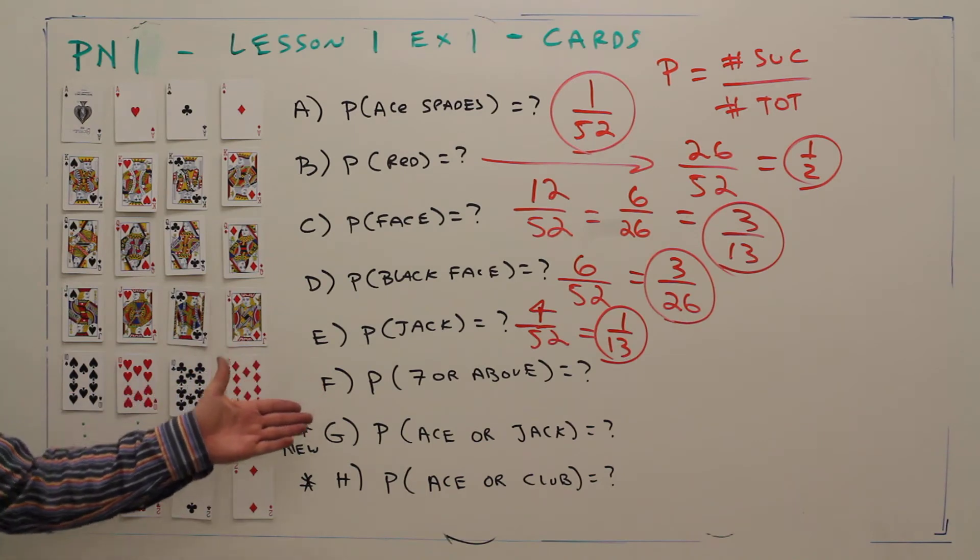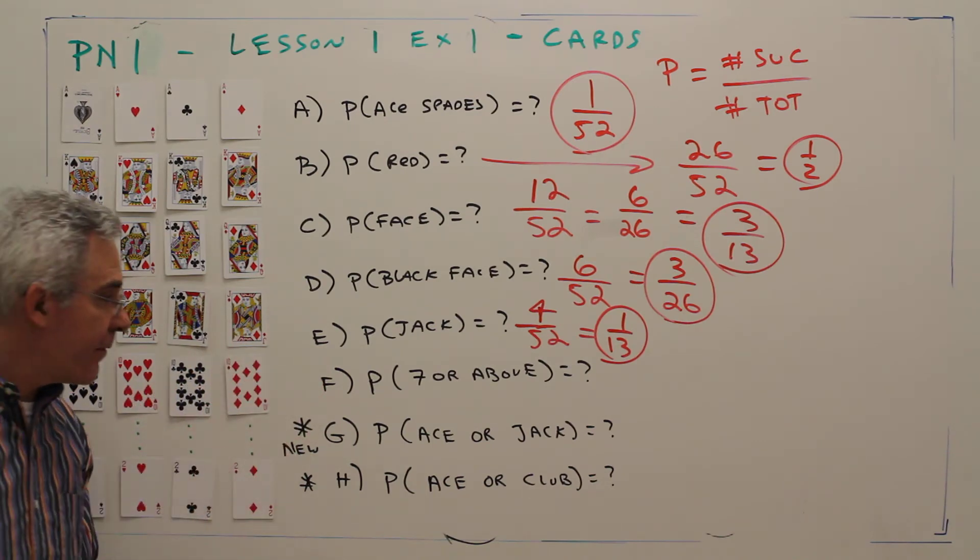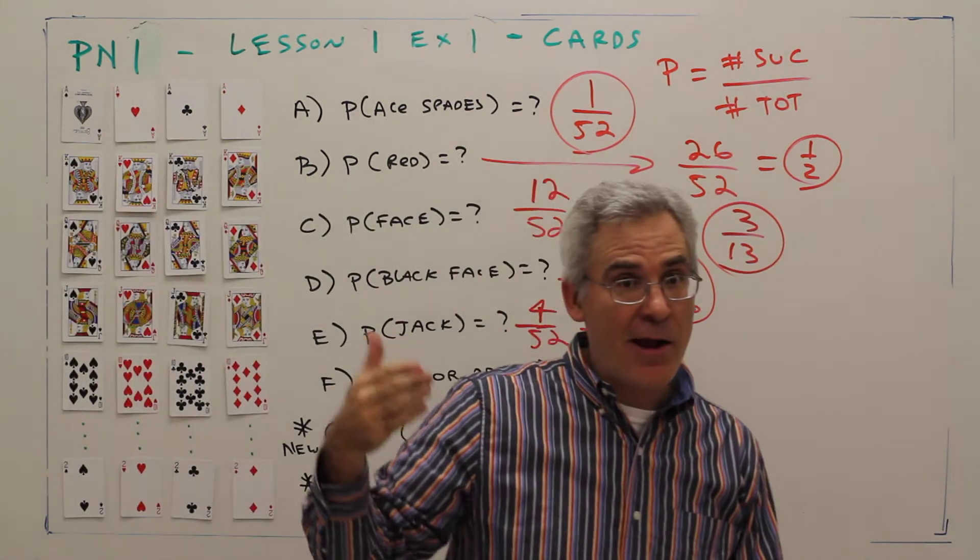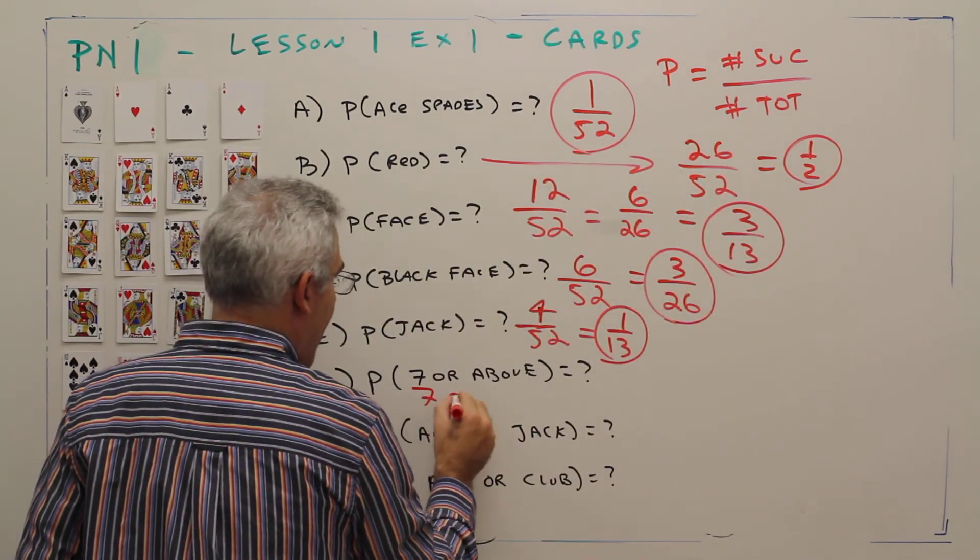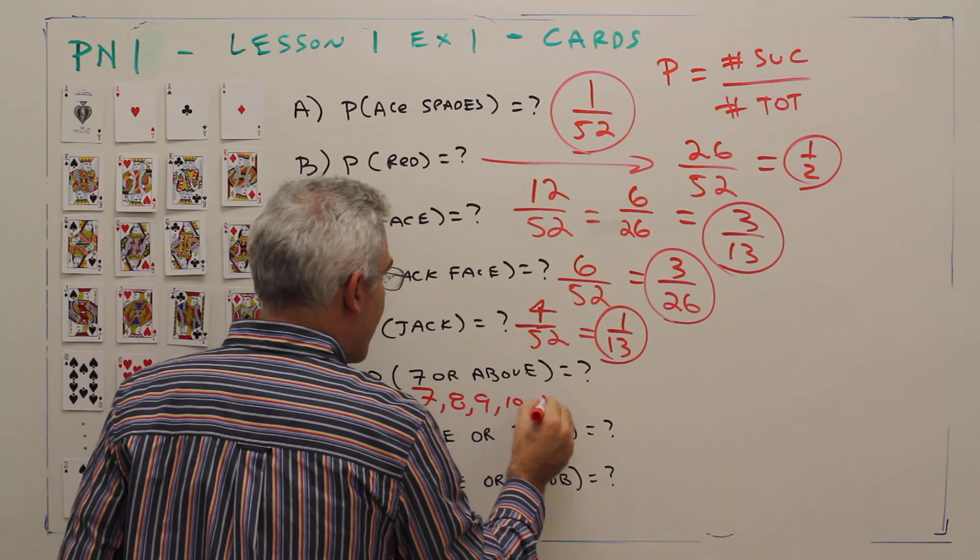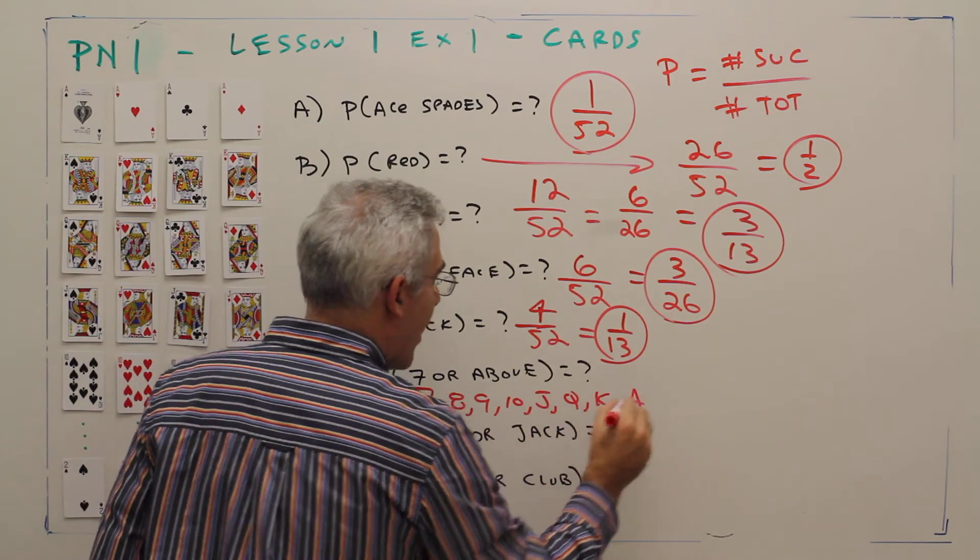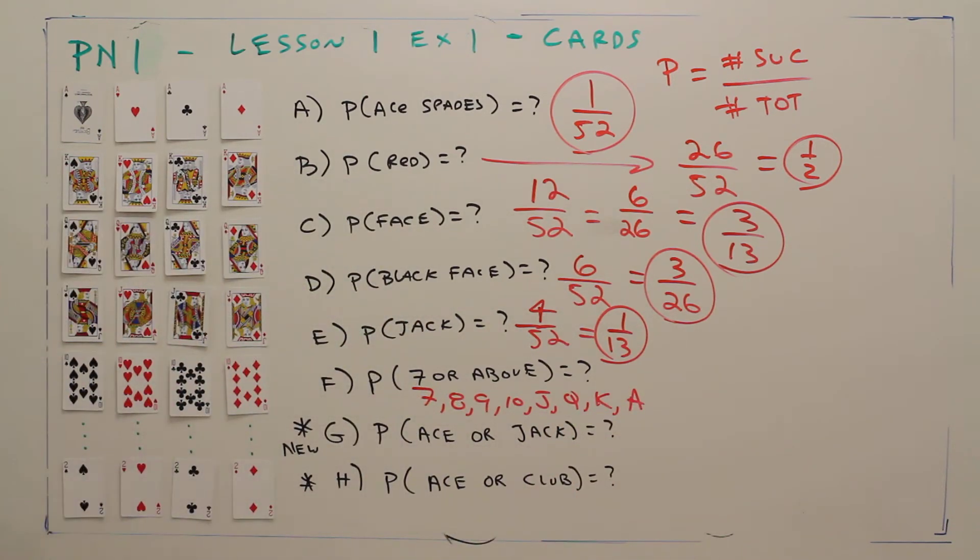Part F: the probability of getting a 7 or above. So I've got 7s or higher. I'll just make a list: could be 7, 8, 9, 10, jack, queen, king, ace. Remember, aces are going to count high.